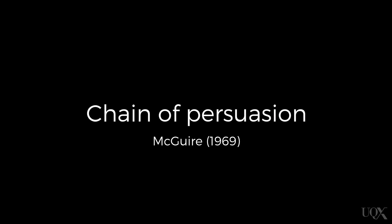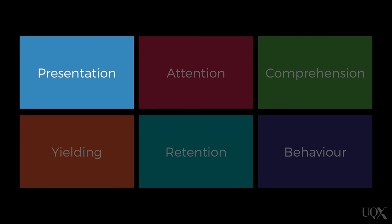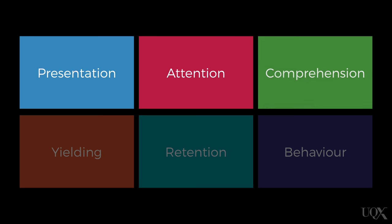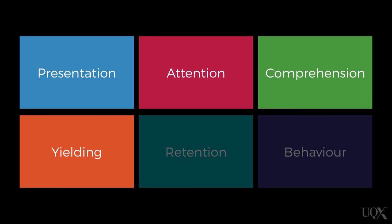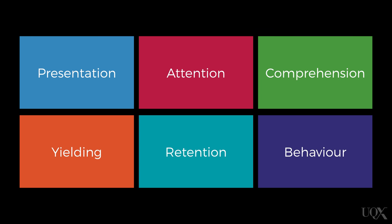Traditional forms of persuasion go something like this. To change someone's attitude and so their behaviour, we first have to give them a strong persuasive message that is possibly associated with some positive cues, such as an attractive or credible communicator. We see this in models such as McGuire's chain of persuasion. For a message to be effective, the person we're trying to persuade has to listen to it, understand it, and then accept it before remembering it and translating it into behaviour.